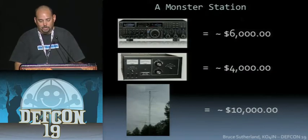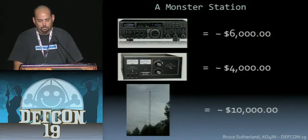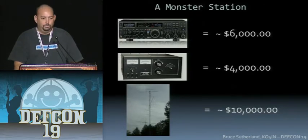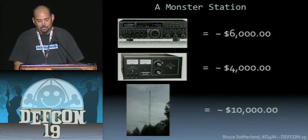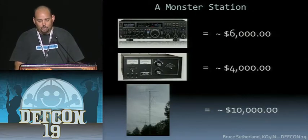You need a pretty sensitive transceiver — this one pictured costs about $6,000, with all kinds of digital signal processing capabilities to eliminate noise and static. Typically you need good atmospheric conditions to get distance out of this kind of system, but with enough power and the right antennas it also works. The amplifier pictured here costs about $4,000 and will give you a maximum output of 1,500 watts, which is what you need to talk from somewhere like the Middle East to the middle of the United States. This amplifier requires a 220-volt outlet and a high amperage breaker.